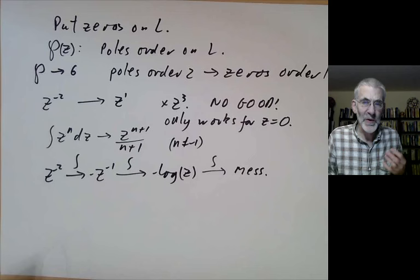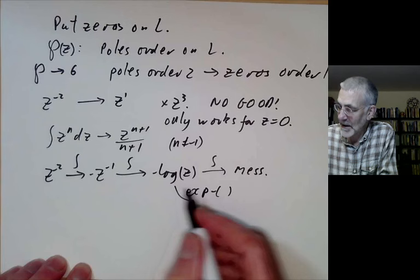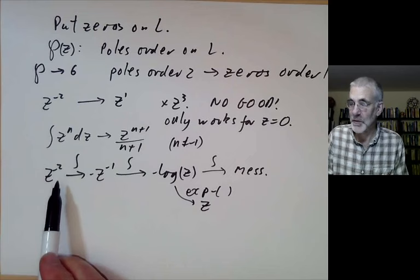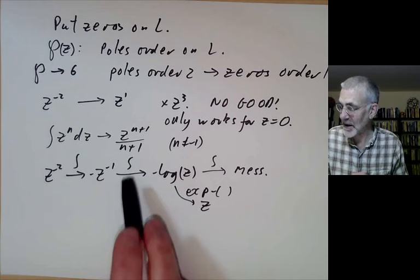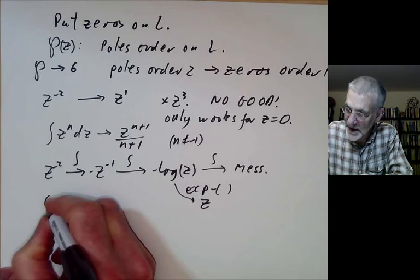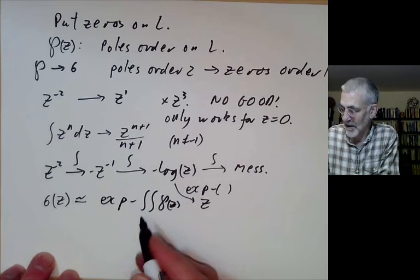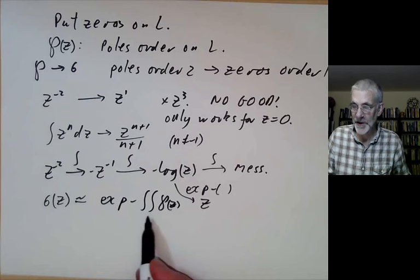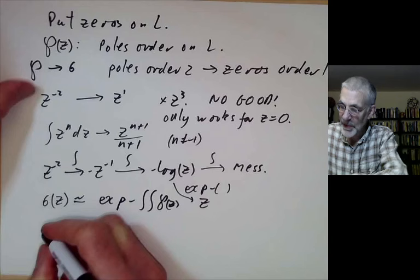But that doesn't really matter because if you've got log of z, you know how to convert that into z. All we have to do is apply exp of minus something — if we do exp of minus something, then we get z. So we can convert a pole of order 2 into a zero of order 1: we just have to integrate twice and then exponentiate. We have to be a little bit careful about the minus sign. This gives us our definition of sigma z — it's going to be roughly exp of minus the integral of the integral of p of z. I'm being a little bit vague about constants of integration, but it doesn't really matter too much. And now we have to think about periodicity of this.